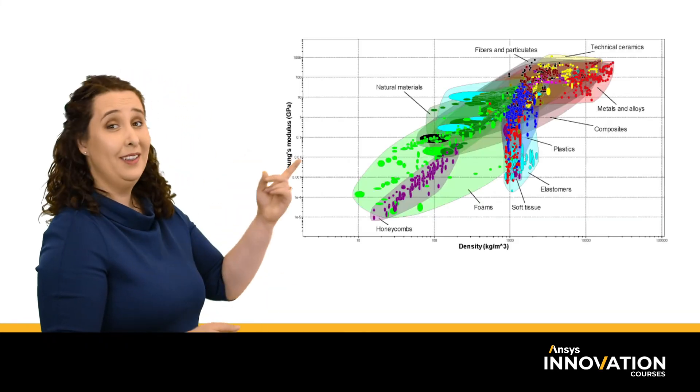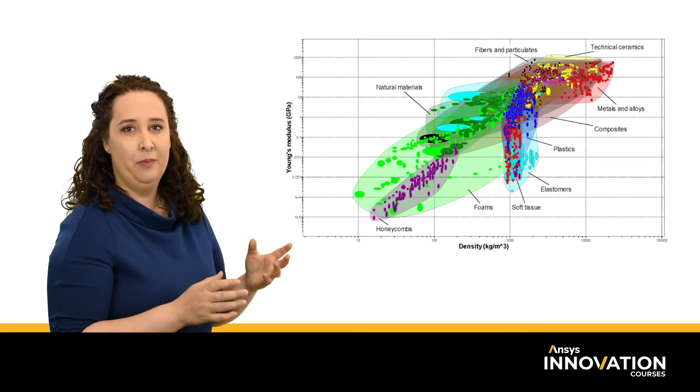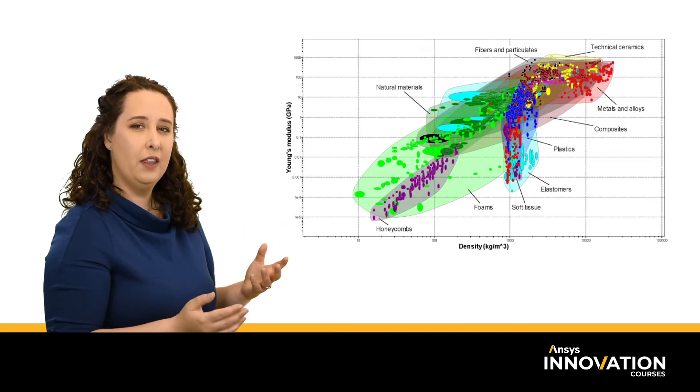So we've now seen how we can use our property charts to help us rank our materials based on our design criteria. But the charts I showed you only have about a hundred engineering materials. In reality, we have thousands of engineering materials, so our chart should really look something like this. This is so much more information to sort through. Is there some way that we could simplify this?